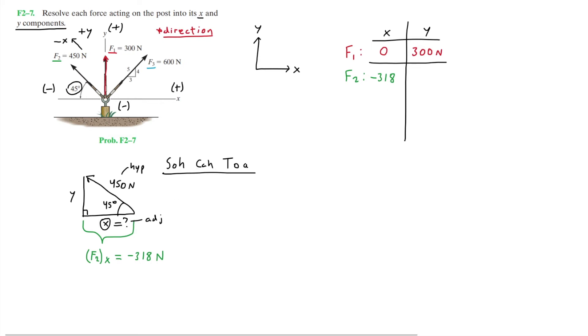Now finding the Y component, we're going to be looking at the Y side of the triangle, which is going to be F2Y. We can see that this side is opposite to the angle, so in this case we're going to be using sine. This will be sine 45 equals the opposite side, which is F2Y, over the hypotenuse, which is 450. Solving for F2Y, this is going to be 450 times sine 45.